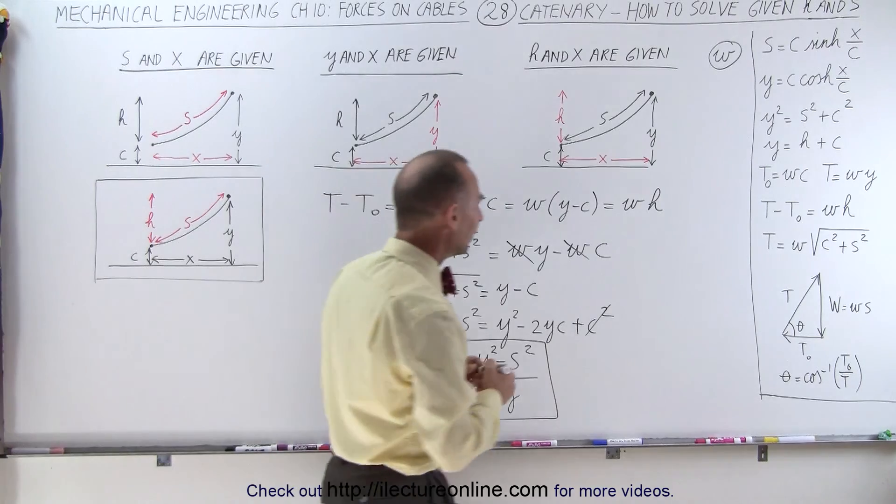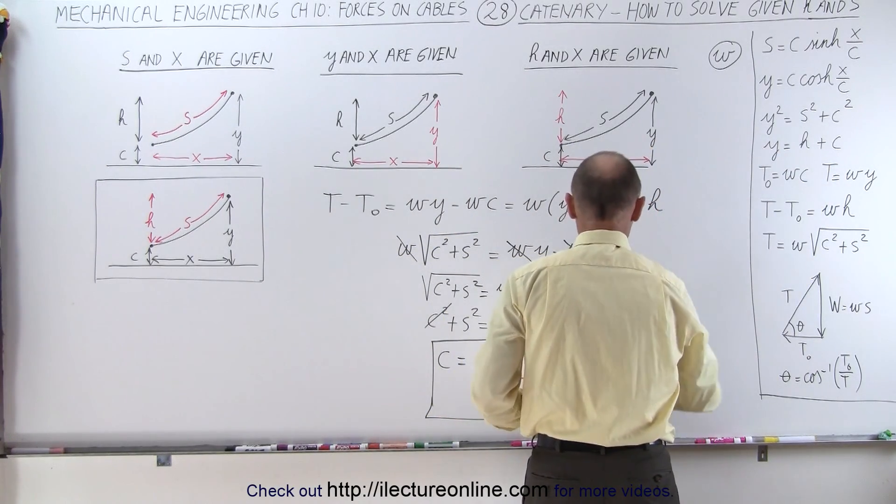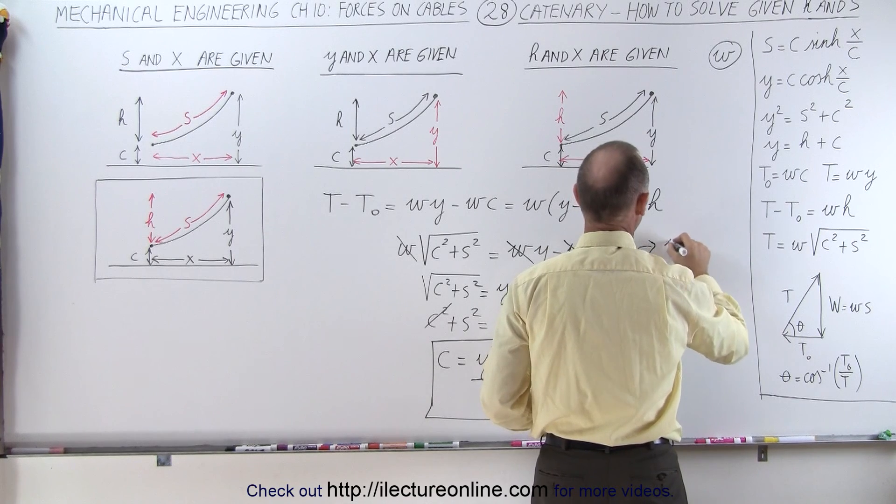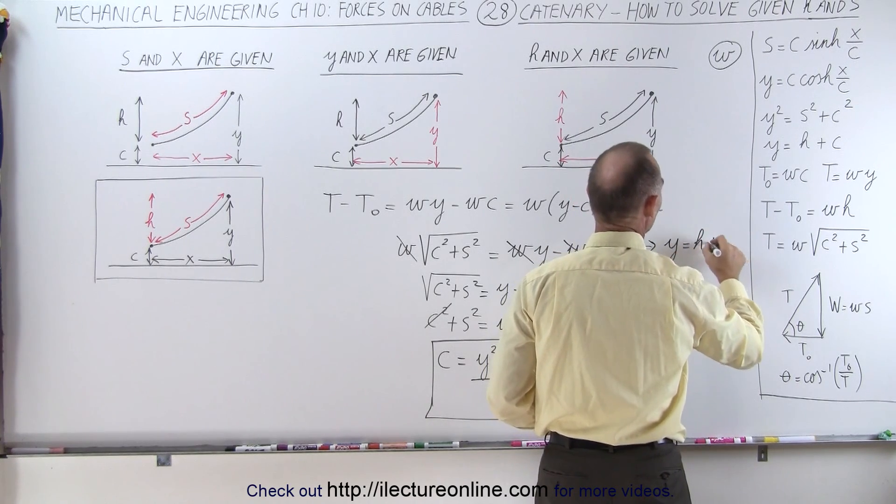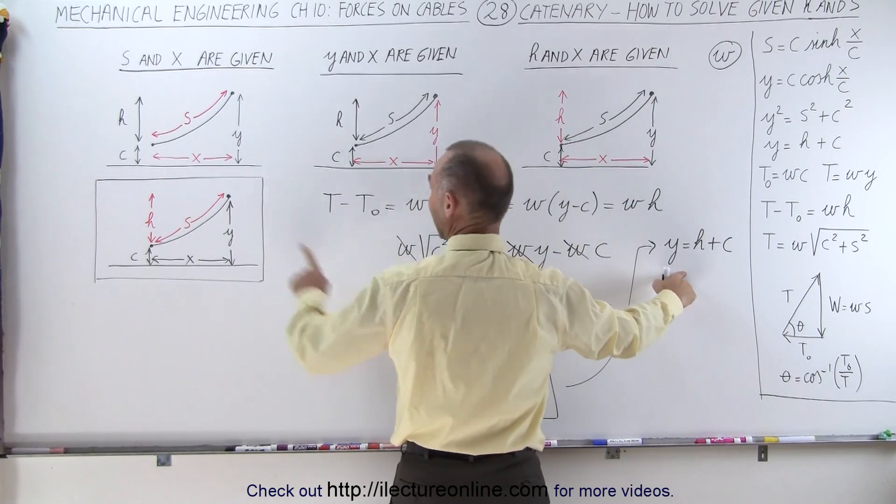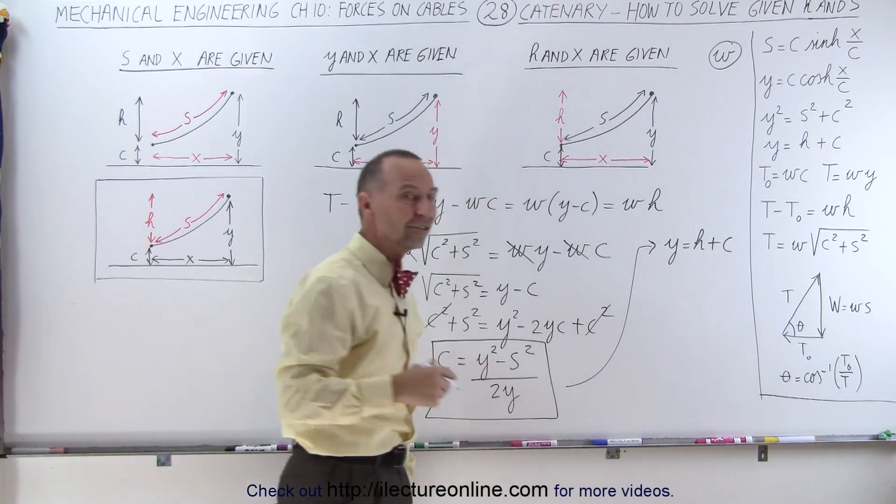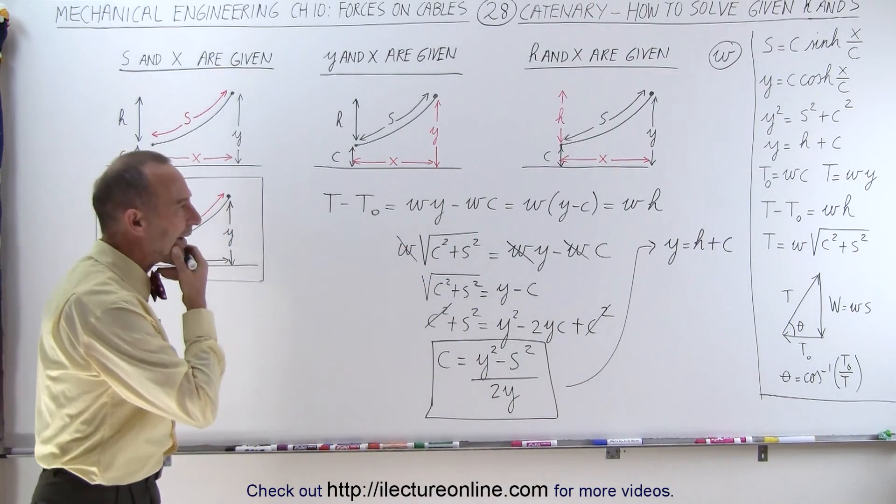Then you can say, all right, if I know what C is equal to and H was given, I can then use the equation that Y is equal to H plus C to find Y. And now I have C, Y, H, and S. There's only one more thing I need to find, which is X. How do I find X?